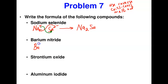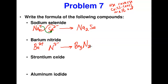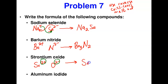For barium nitride: barium is in group 2 (2+); nitride is in group 5 (N³⁻). Swap charges — barium takes 3, nitrogen takes 2 — giving Ba₃N₂. For strontium oxide: strontium is in group 2 (Sr²⁺) and oxygen is in group 6 (2−). Since both charges are equal, just bring down the formula without charges: SrO.